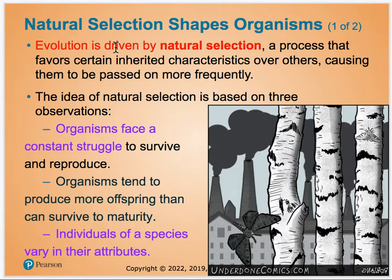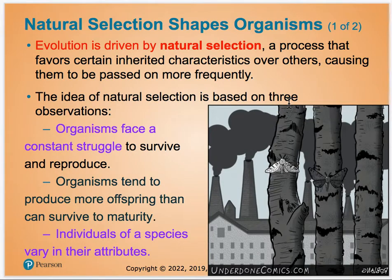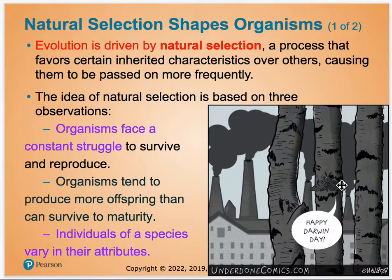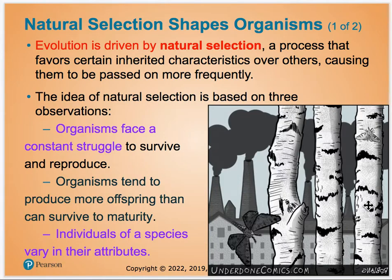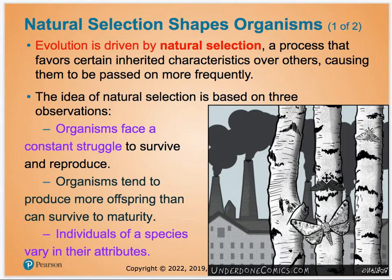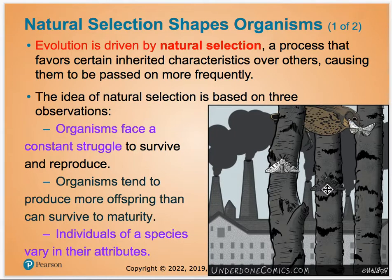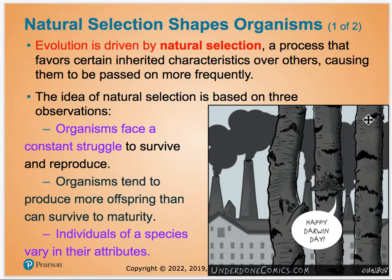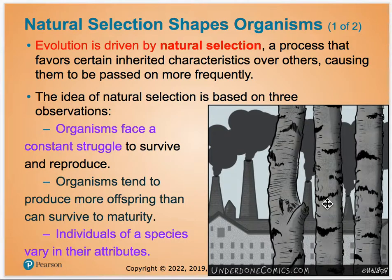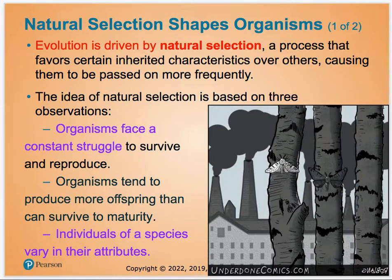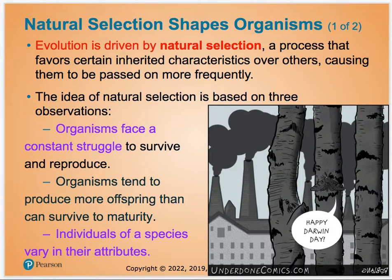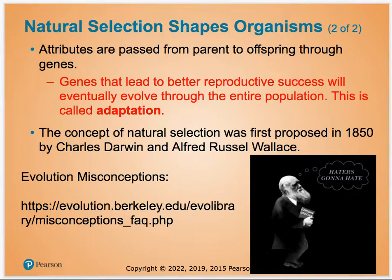Evolution is driven by natural selection. A classic example is the birch trees before and after the Industrial Revolution. Birch trees are naturally very white, and a moth had genes to be either dark or light. When the trees were light, light moths hid well and birds ate the darker moths, decreasing their gene pool. During the Industrial Revolution, when trees were darkened with soot, black moths hid more easily and white moths were eaten more. This caused a shift in allele frequency in the gene pool — that shift is called evolution.